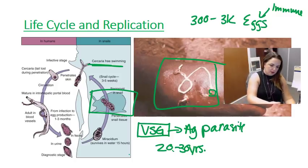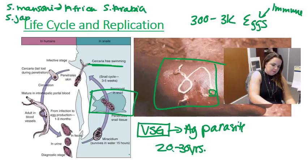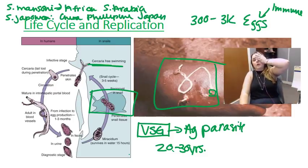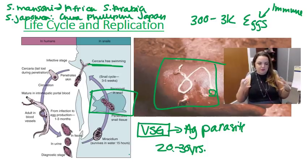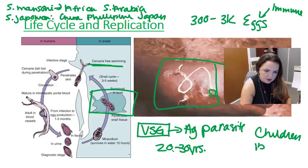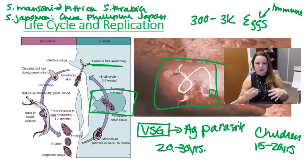Where do we find these? S. mansoni is found in Africa, Saudi Arabia, and Madagascar. S. japonicum is found in China, the Philippines, and Japan. S. haematobium is found in the Nile River Valley. Infection is typically first acquired in childhood, and the prevalence and intensity peaks around 15 to 20 years of age. There are also reservoir hosts — not just humans. You can see it in domestic animals like cats and dogs, as well as primates, rodents, and marsupials.